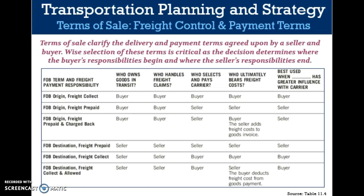Terms of sale clarify the delivery and payment terms agreed upon by a seller and buyer. Selection of these terms is critical, as the decision determines where the buyer's responsibilities begin and where the seller's responsibilities end. They cover issues related to mode and carrier selection, transportation rate negotiation, in-transit freight responsibility, and other key decisions.